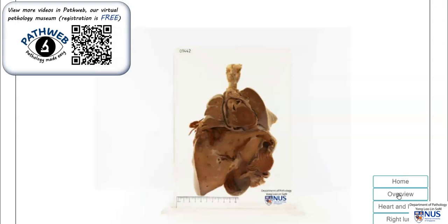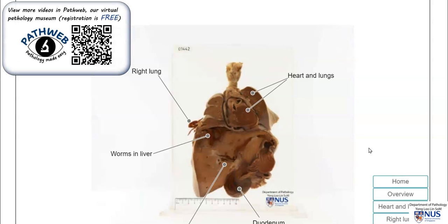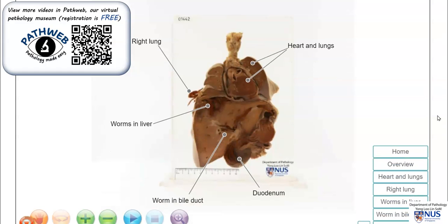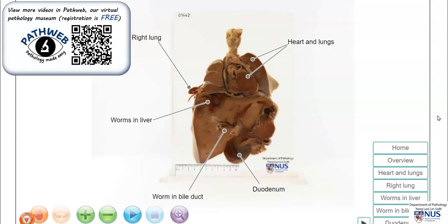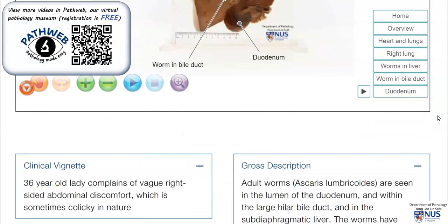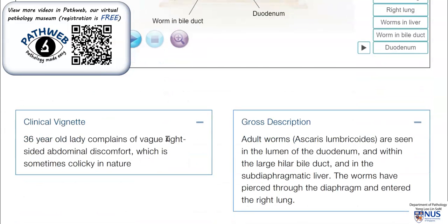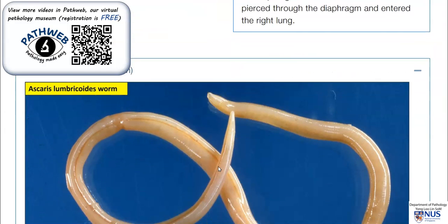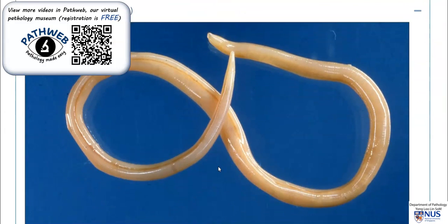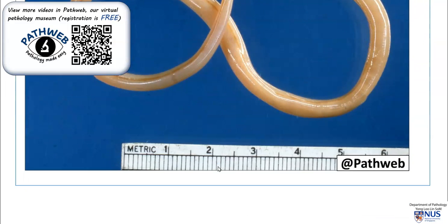This virtual pathology specimen is taken from our free online pathology resource, PathWeb. You can register for free — the link is provided in the video description. If you scroll down, you will see additional information as well as talking pots and talking slides videos. Thank you.